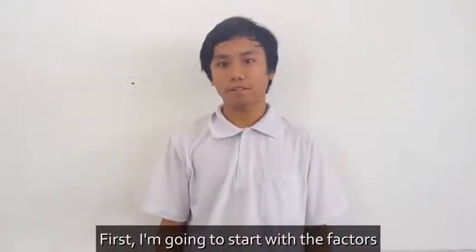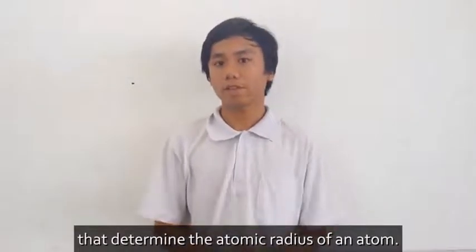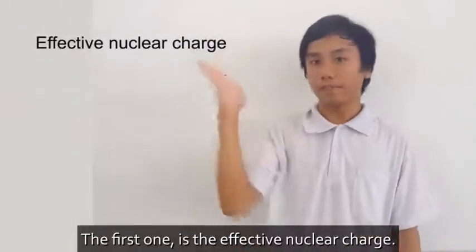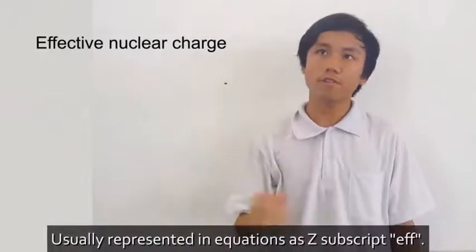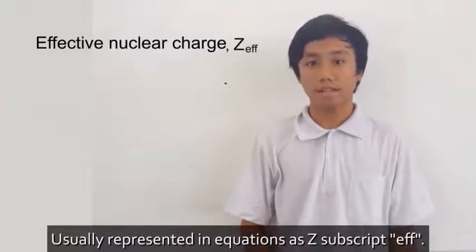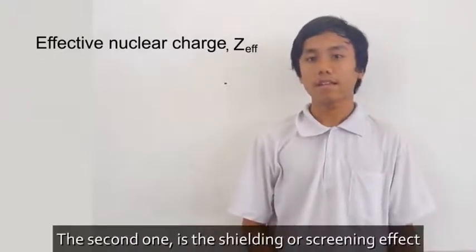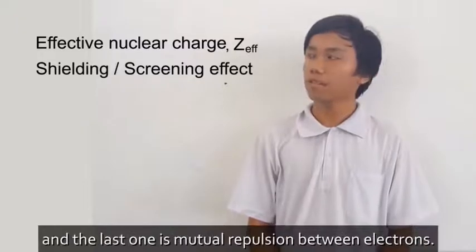First, I'm going to start with the factors that determine the atomic radius of an atom. The first one is the effective nuclear charge, usually represented in equations as Z. The second one is the shielding or screening effect and the last one